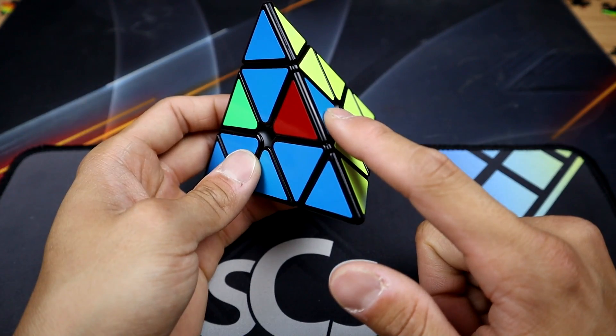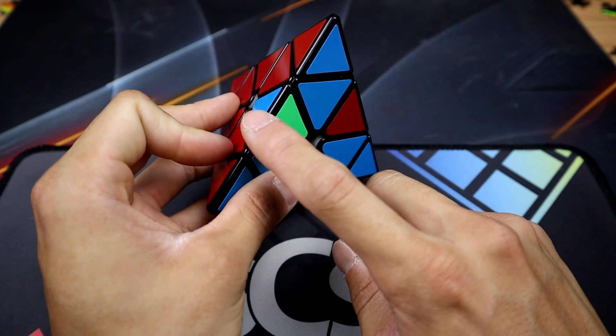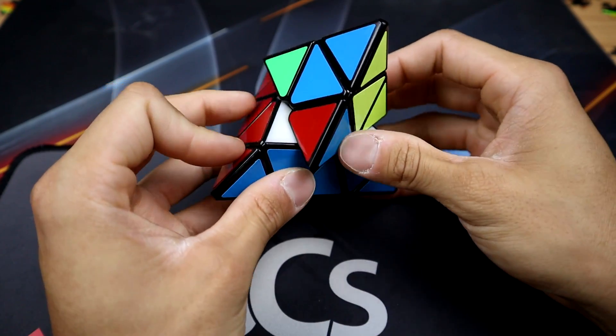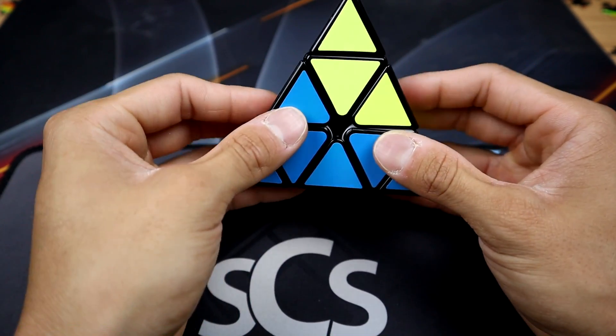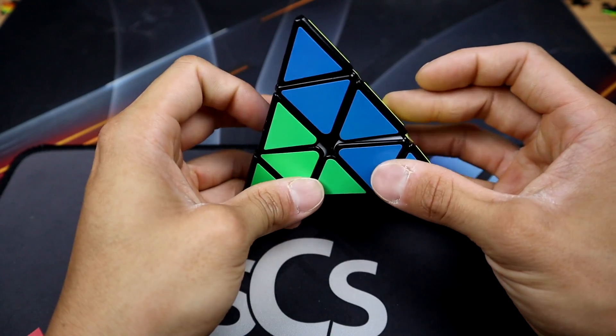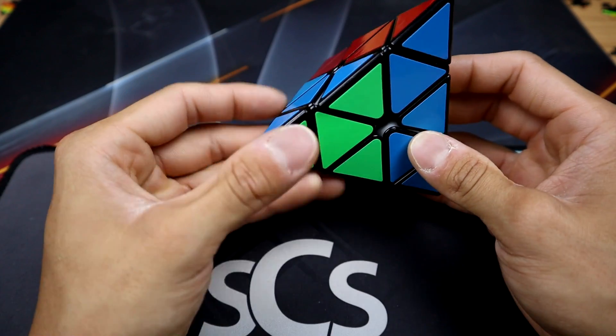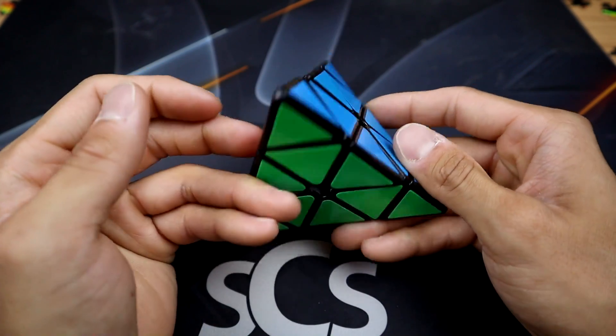And then the other case, which the blue-red has to go to the left, this is the left version of this algorithm. We move the top layer so that this red matches the red, move the left up, the top U prime back there, and then left side back down. That's it.